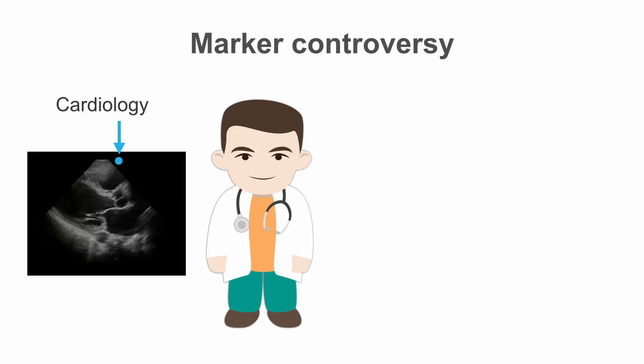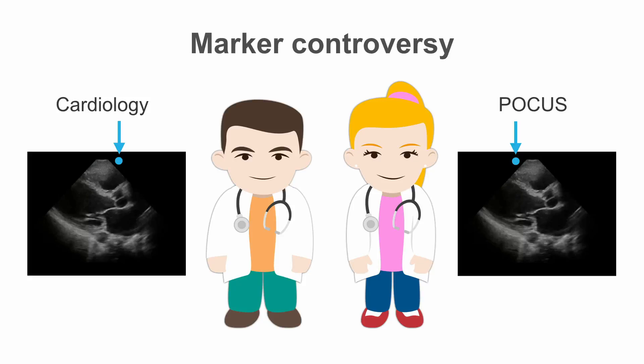Now I have to bring this up — there is some marker controversy. Where should the dot go on the screen? You're probably used to seeing cardiology echoes where they will traditionally place the indicator to the right of the screen. However, because point-of-care ultrasound is not just echoes but extends to other organ systems, which traditionally have the indicator to the left of the screen, when we do our echoes we continue to keep the indicator to the left of the screen. To accommodate for that, we rotate our probe indicator 180 degrees to obtain our images. This produces the same image orientation on your screen as our cardiology colleagues, so we all keep it very consistent.